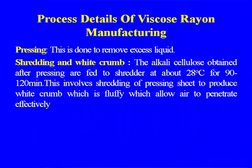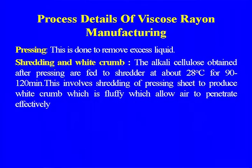The next step is pressing, done to remove excess liquid. After pressing, the alkali cellulose goes to the shredder at about 28°C for 90 to 120 minutes. This involves shredding of the pressed sheets to produce white crumb, which is fluffy and allows air to penetrate effectively inside. If the pulp is not fluffy, the xanthation reaction in subsequent stages will not be effective, so making white crumb through shredding is a very important step.